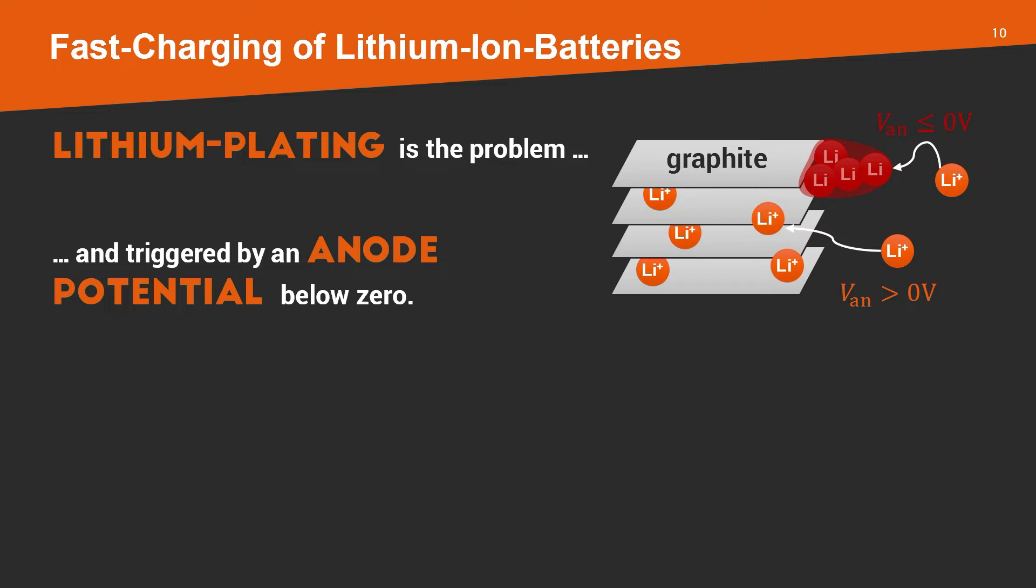When you charge, you put lithium ions from the cathode into the anode. And the anode is usually made of graphite. So if too many lithium ions arrive at the anode surface at the same time, a side reaction happens. So the lithium ions do not get intercalated into the graphite, but they react to metallic lithium at the anode surface. And there's the trigger for that. If you know the anode surface potential, you know if intercalation or lithium plating happens. And the trigger is the anode surface potential. If this is below zero, you get lithium plating. If this is above zero, intercalation happens.